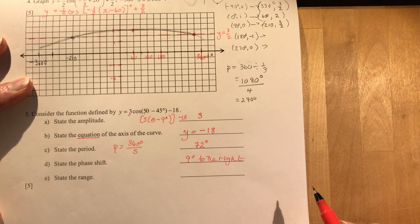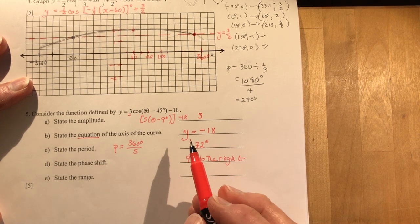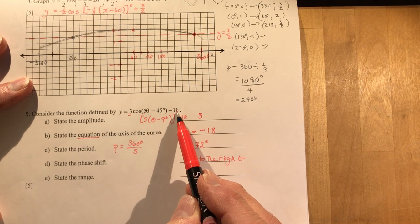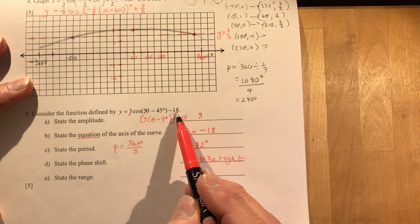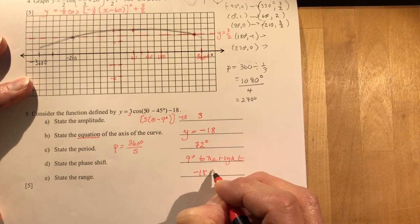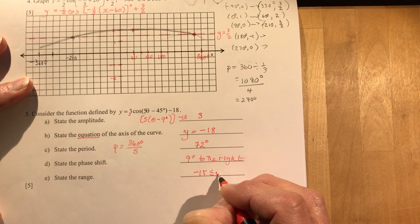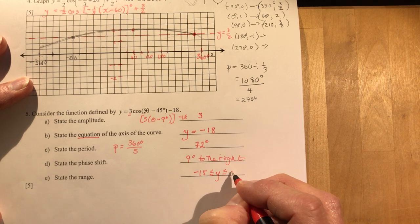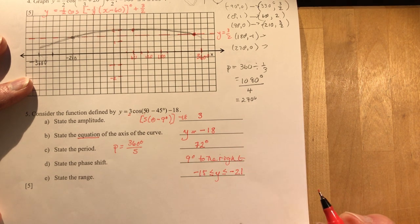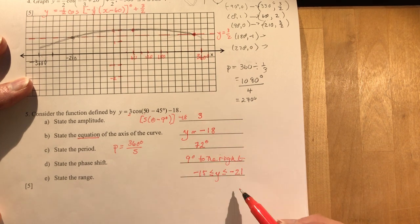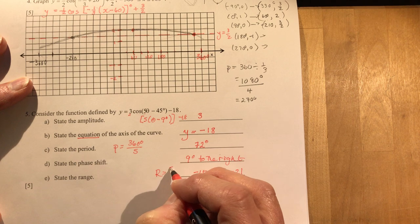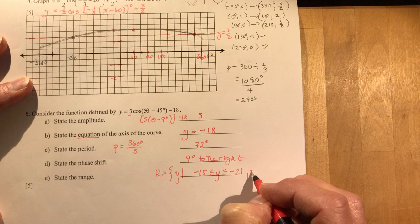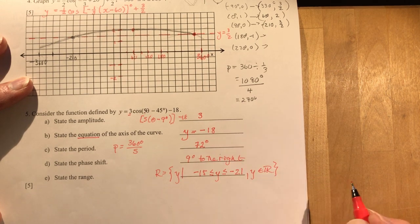State the range. The range is going to be from the axis up and down the amplitude. So if the axis is y equals minus 18, I add three to it. That's going to give me minus 15. And I'm going to subtract three from minus 18. That's going to give me minus 21. So three up, three down. So that's range, set of y's, such that y's between here and here, and y's an element of real numbers. And there's your number five.